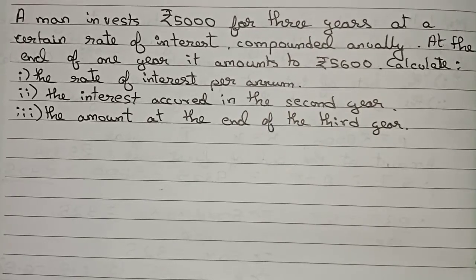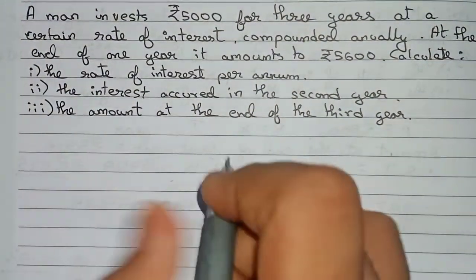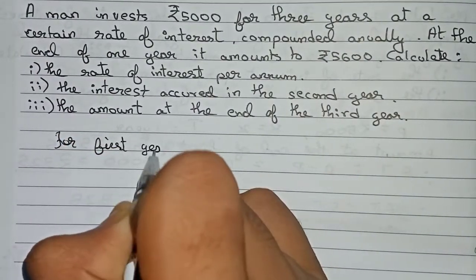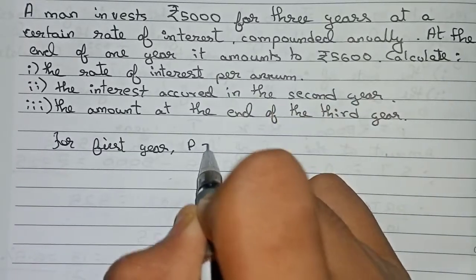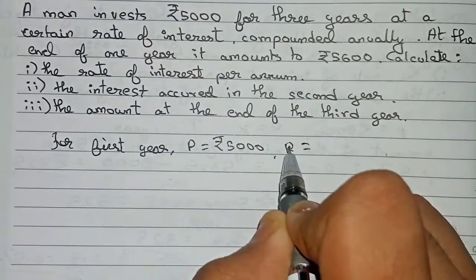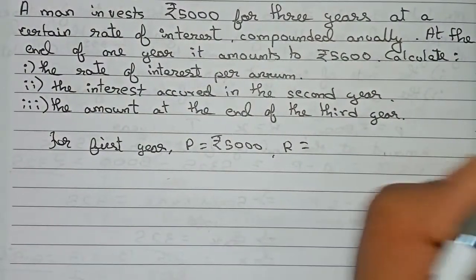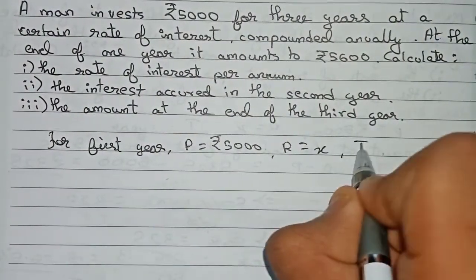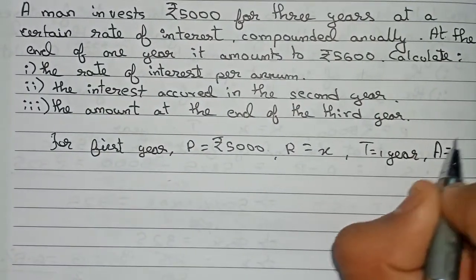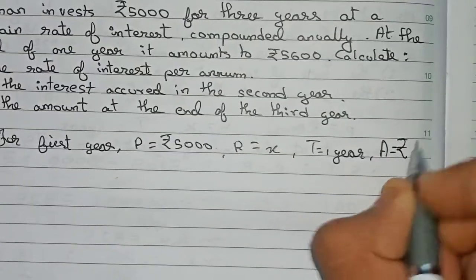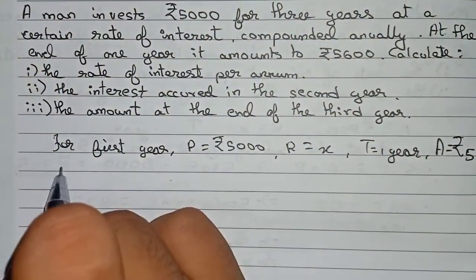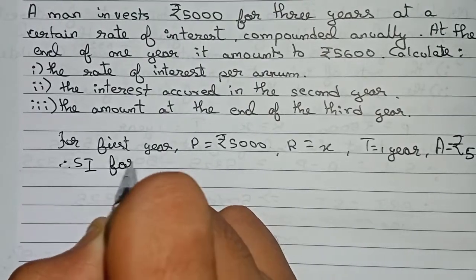Let's start. For the first year: principal is equal to 5000, rate is unknown so we take it as x, time is equal to one year, and the amount is given as 5600. Now we find the SI for the first year.